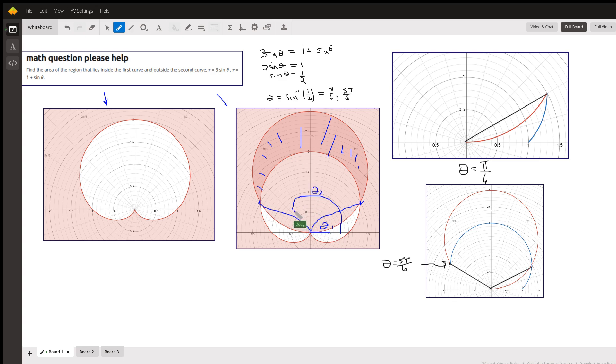How do you find those points of intersection? Well, you set the r values equal to each other. So 3 sine of theta equals 1 plus the sine of theta. I won't go through all this, but you can find these points of intersection right here. Pi over 6 is this angle, and 5 pi over 6 takes us over to here.